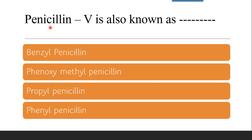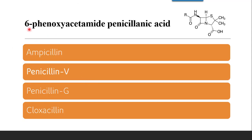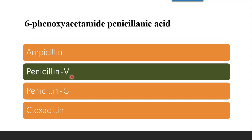The next member from the beta-lactam penicillin class is penicillin V, also known as phenoxymethyl penicillin. In benzyl penicillin, R was C6H5CH2 with an amide; in penicillin V, R is C6H5OCH2 — that is phenoxy, with oxygen present, then methyl, then penicillin. So it is called phenoxymethyl penicillin. Therefore, 6-phenoxyacetamide penicillinic acid corresponds to penicillin V, and the correct answer is phenoxymethyl penicillin.